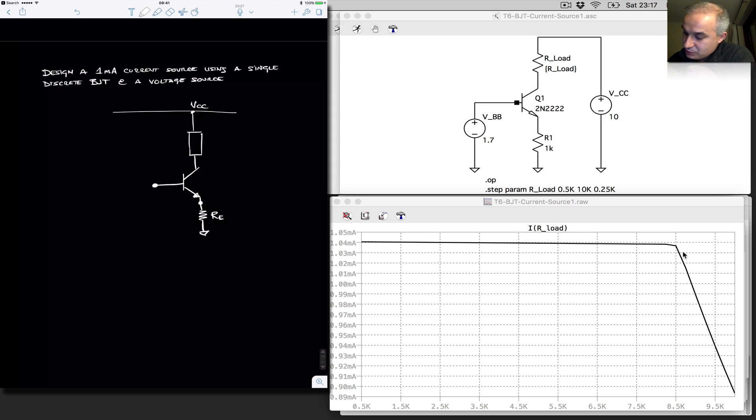What we can do, if we have a single supply, is to use a voltage divider here, and this is a biasing network, sometimes known as a four-resistor biasing network. If you have also a collector resistor, I'm going to call this R1 and R2.